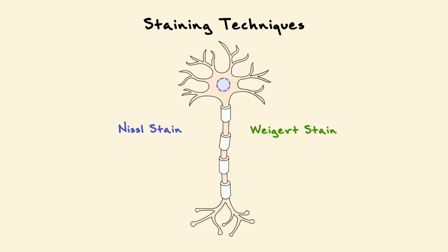The Nissel stain, developed by Franz Nissel, aims to stain RNA by exploiting the fact that RNA is negatively charged. Since most of the RNA is processed at the endoplasmic reticulum and the endoplasmic reticulum is concentrated in the soma or cell body, the Nissel stain ends up staining the cell bodies of the neurons.